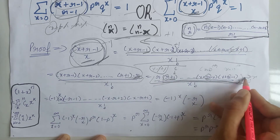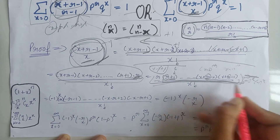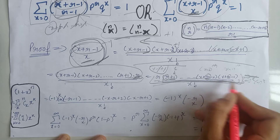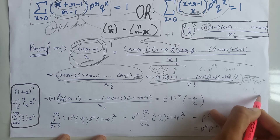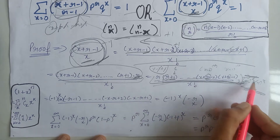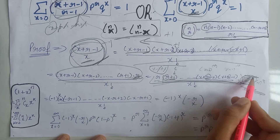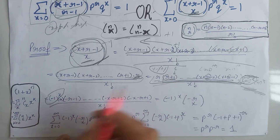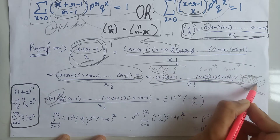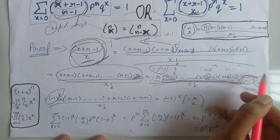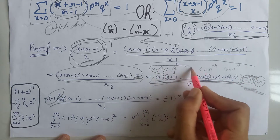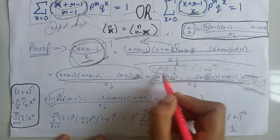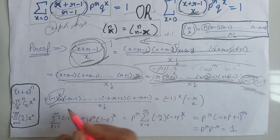We can write (-1)^x times 1^x with this numerator — the answer will be the same because minus 1 will become plus and 1^x gives only 1. We write this (-1)^x as it is, then multiply it into the x terms, meaning we multiply minus 1 with each of these x terms.